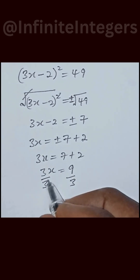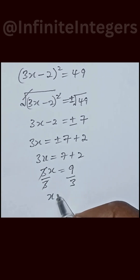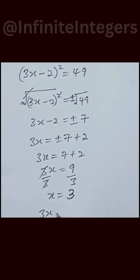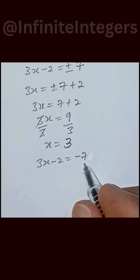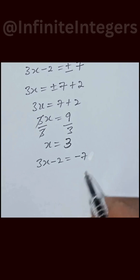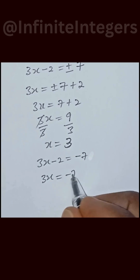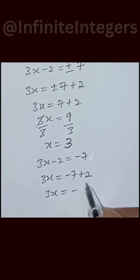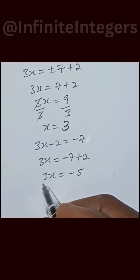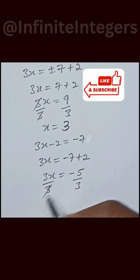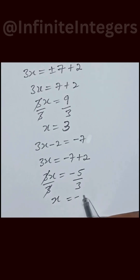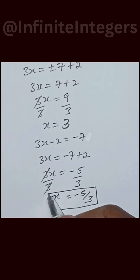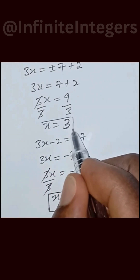3x equals 9. Divide both sides by 3, and we have x equal to 3. For the second value of x, we have 3x minus 2 equal to minus 7. We move the 2 to the right hand side: 3x equal to minus 7 plus 2, which gives us 3x equal to minus 5. Divide by 3, we have x equal to minus 5 over 3. So our solutions are x = 3 and x = -5/3.